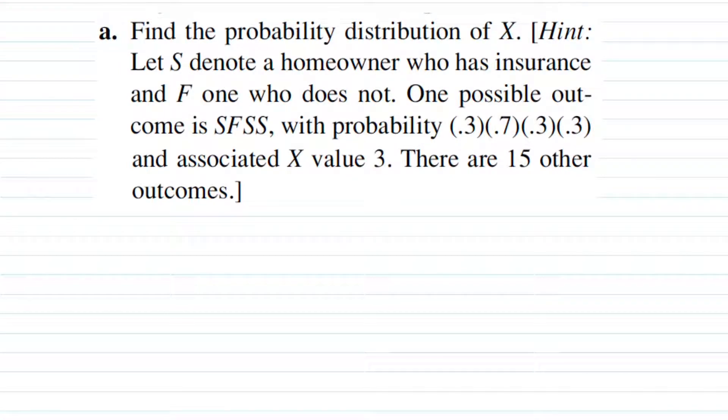Let S denote a homeowner who has insurance and F, one who does not. From the main question we can remark that our sample space is size 4 and our possible outcomes are 2. So the probability distribution of X will consist of outcomes 2 to the power of 4, that is, 16 combinations.